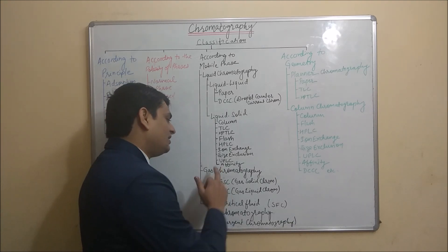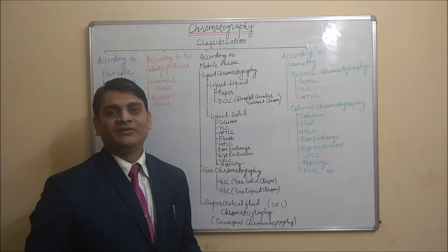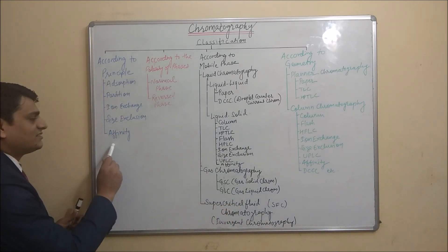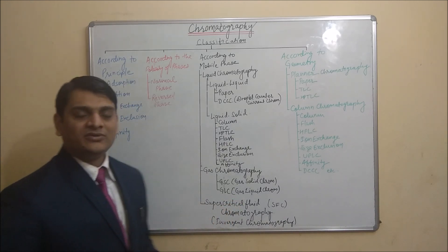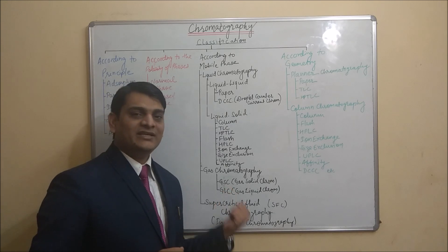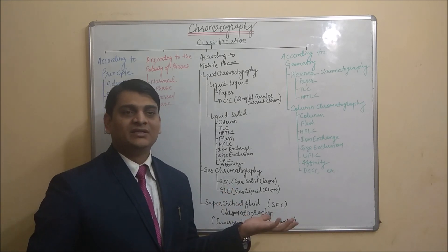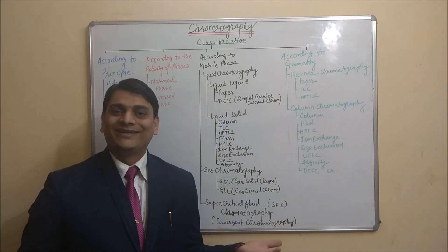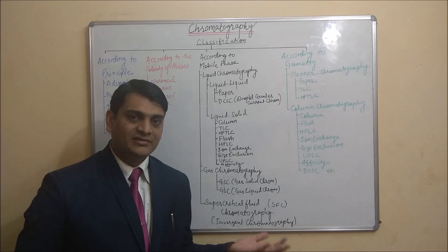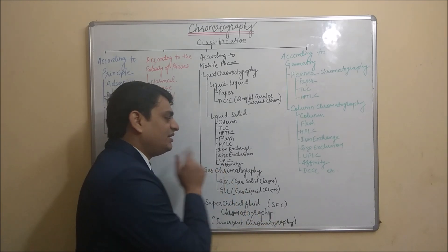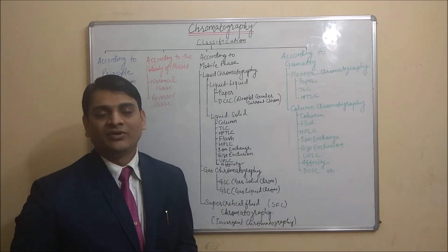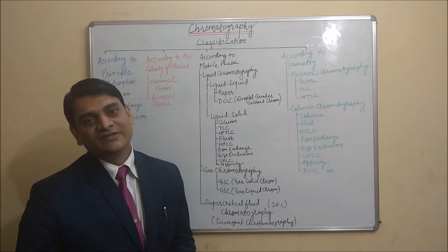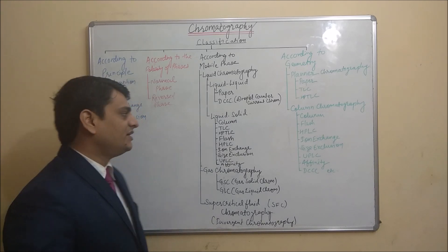Affinity chromatography is highly specific, allowing separation of antigen-antibody complexes, carbohydrate-lectins, and similar specific interactions. In affinity chromatography, the stationary phase is solid and the mobile phase is liquid.